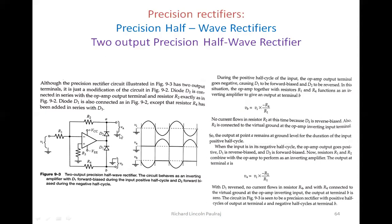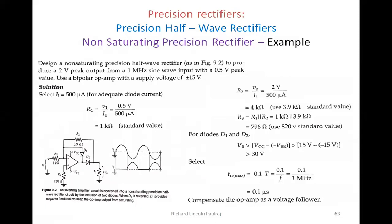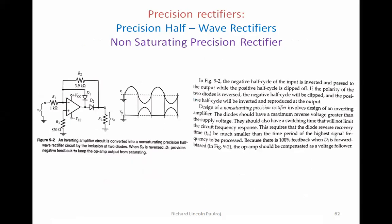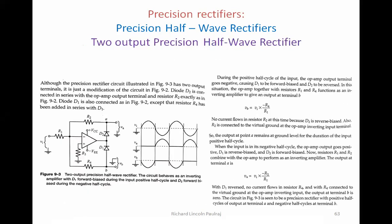We also saw equations for the half-wave rectifier. These examples are not for your examination but are for understanding how designing is done with respect to non-saturating precision rectifiers. We also saw the importance of resistor R2, which is very important because without it there would be no amplification.